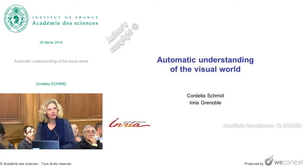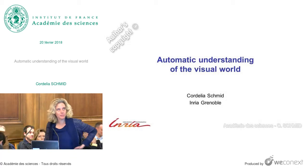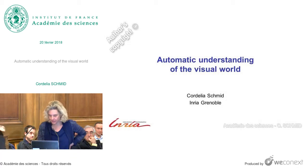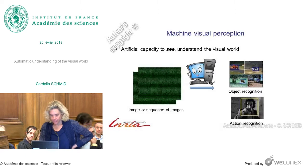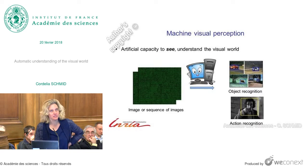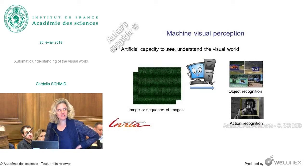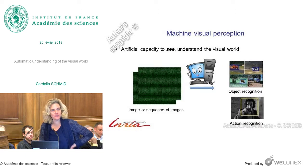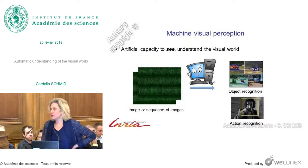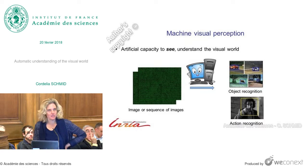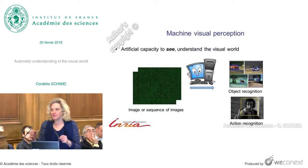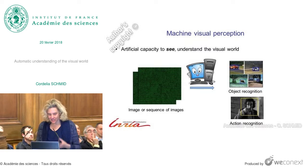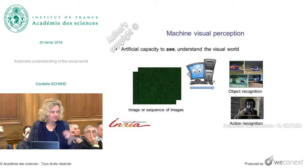I'll talk about some recent progress in automatic understanding of the visual world. First of all, why is this a very hard problem? What the computer sees is a sequence of numbers, and from there it has to go on to interpret what's in the image. So it's actually far from trivial. We go from this pixel representation to, for example, action recognition to see what are the actions in the image.